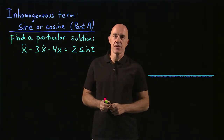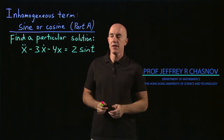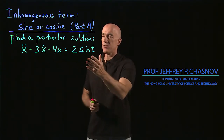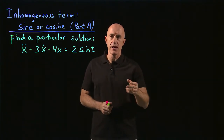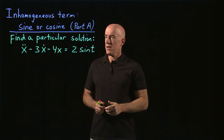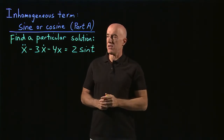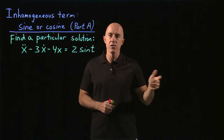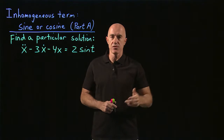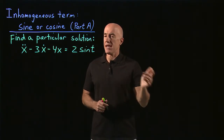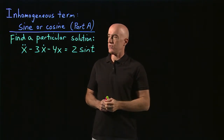In this video, we're going to learn how to find a particular solution of an inhomogeneous equation when the right-hand side is a sine or a cosine function. There are two different methods of doing this. The method in this video is the more straightforward approach, but maybe requires a little bit more algebra. The method in the next video is more sophisticated, but is maybe easier to do.